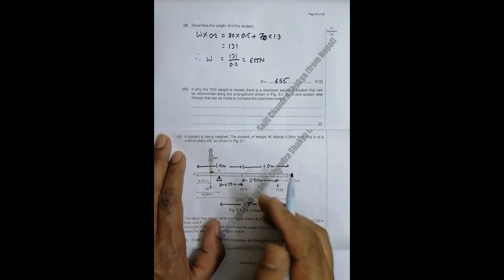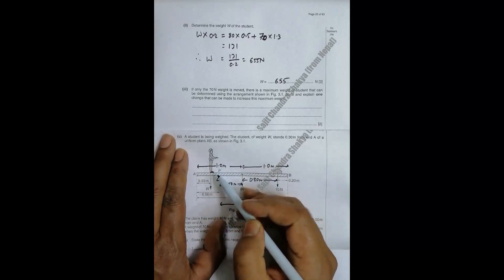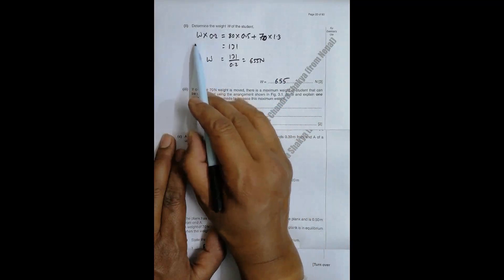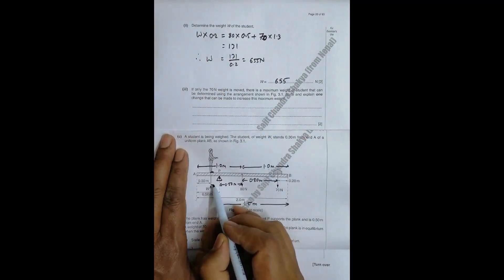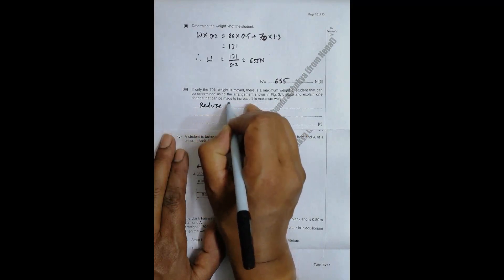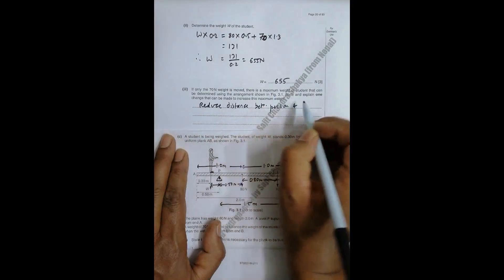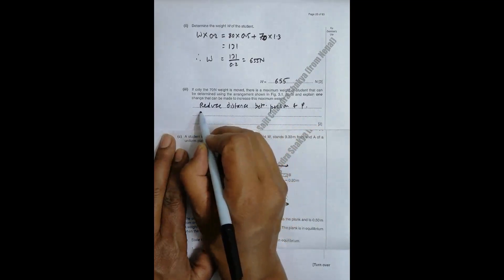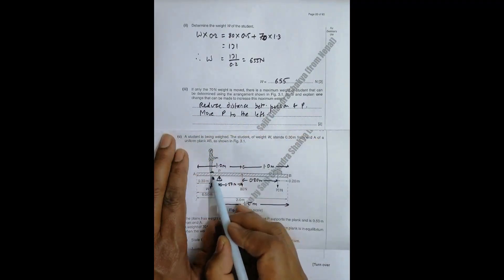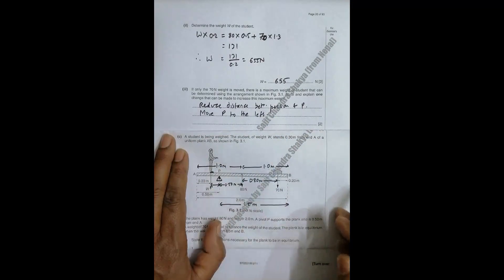Explain what change can be made to increase the maximum weight. We have to increase the possible weight of this thing to measure. The anticlockwise moment is given by the product of W and this distance. So if we want to maximize this W, we have to reduce this distance between the person and P. So that requires that we move P to the left. When we do so, the moment here decreases and the moment here increases, so we can measure more W. That's the answer to this question.